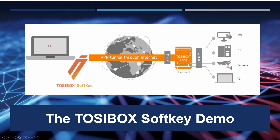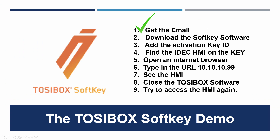Today we're going to do the TossieBox soft key demo. The steps are: first, you get an email with a download link for the soft key software. Next, you activate that key. Then you find the IDEC HMI — once the software is installed and running, the TossieBox soft key automatically connects. As long as you're on the internet and the other device is on the internet, the key will seek out and find its lock no matter where it is.